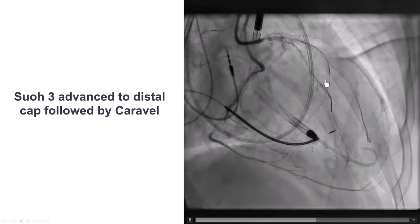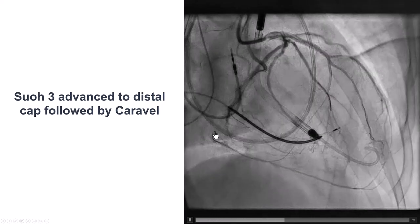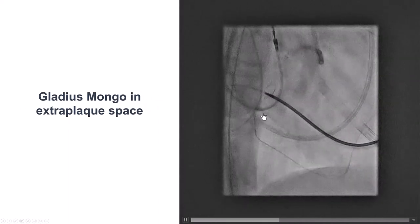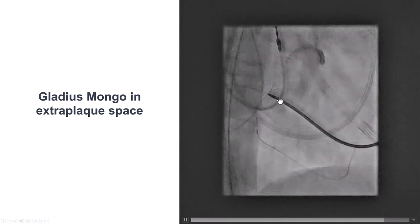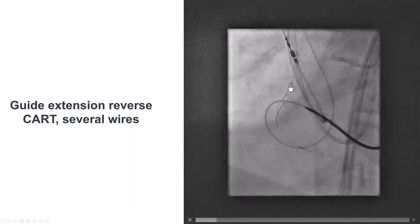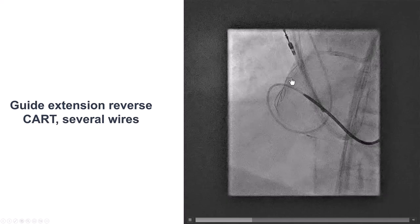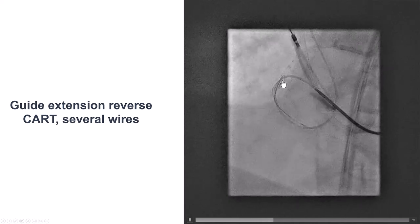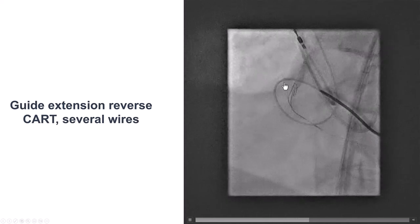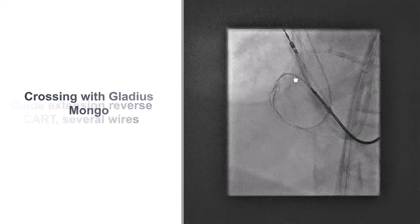We then advanced a Caraval microcatheter all the way to the distal cap. We can see that the length of the occlusion is relatively short. We then advanced a retrograde Gladius Mongo guide wire that appeared to be knuckling and going into the extraplaque space. So we have the antegrade equipment including the guide extension in the true lumen, whereas the retrograde is in the extraplaque space.